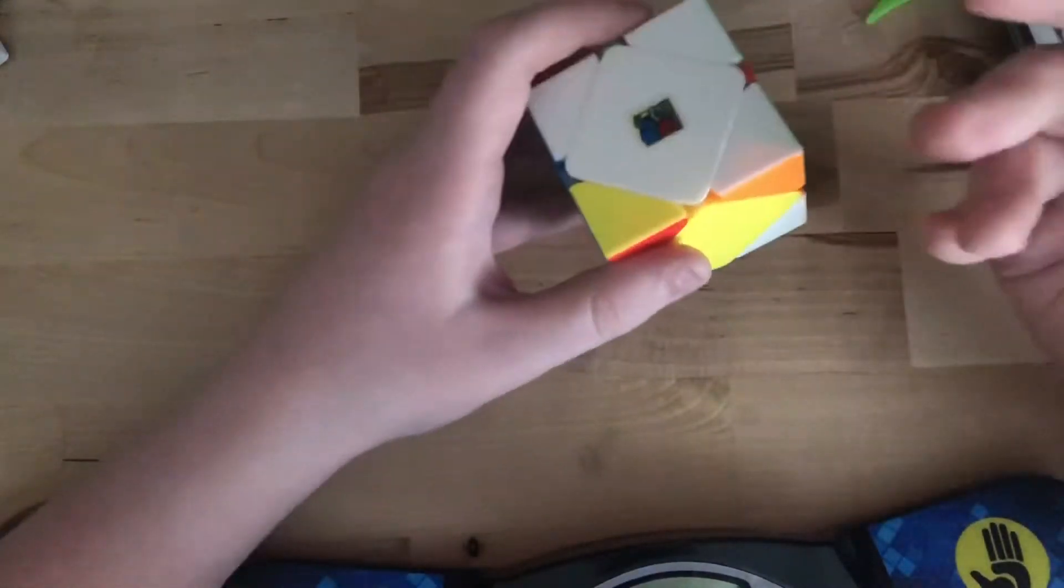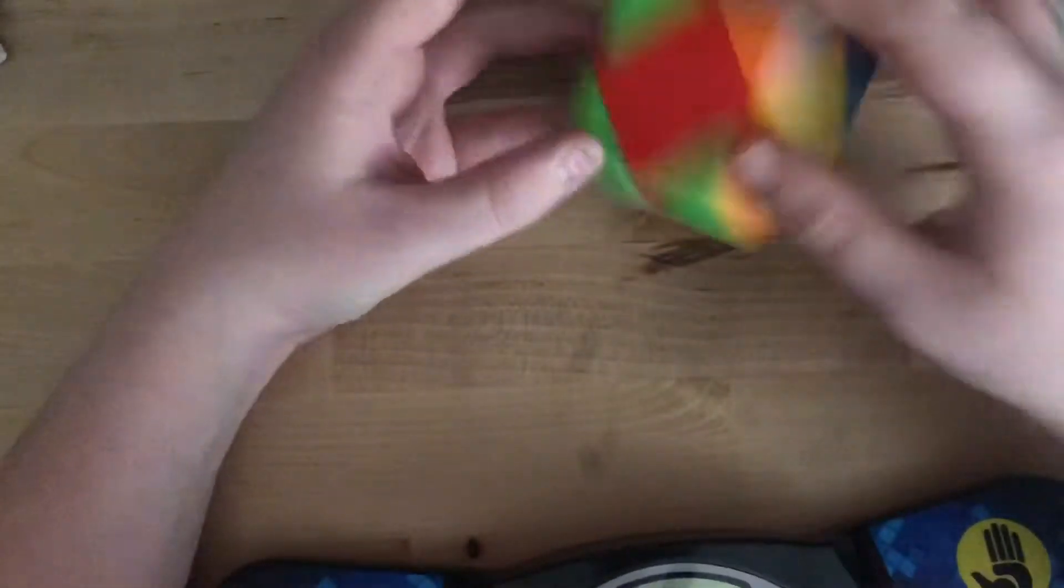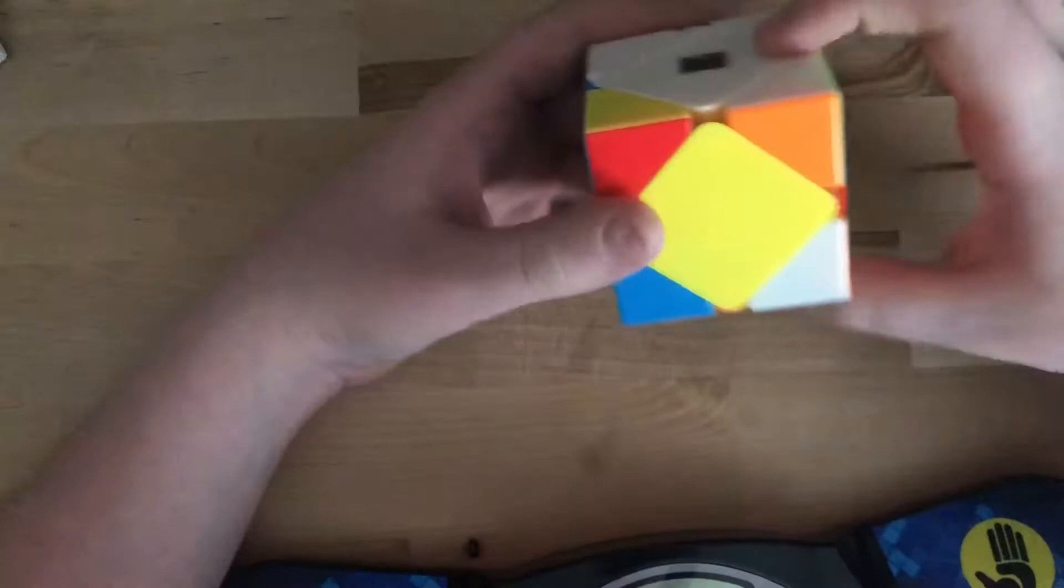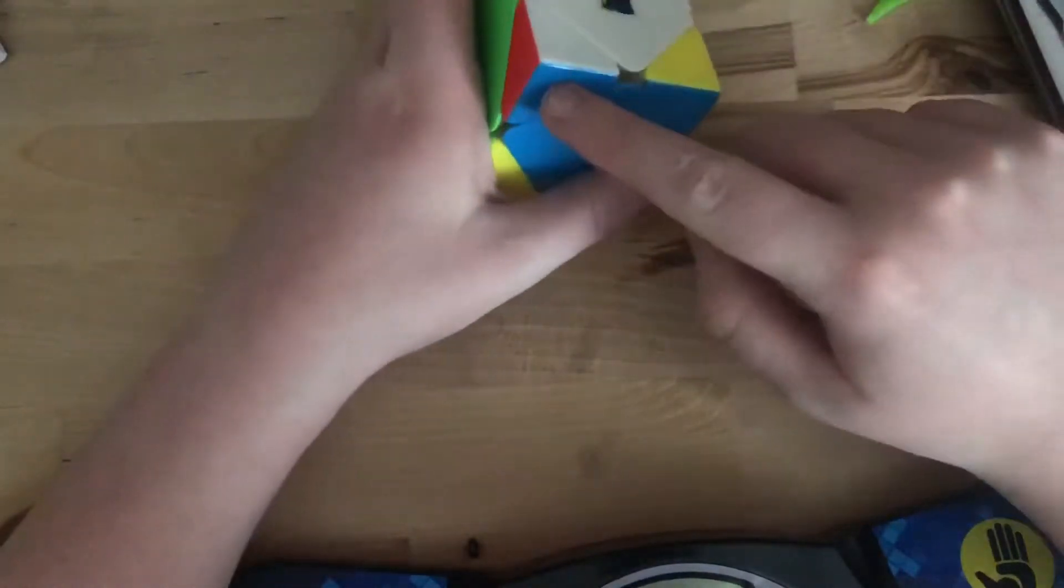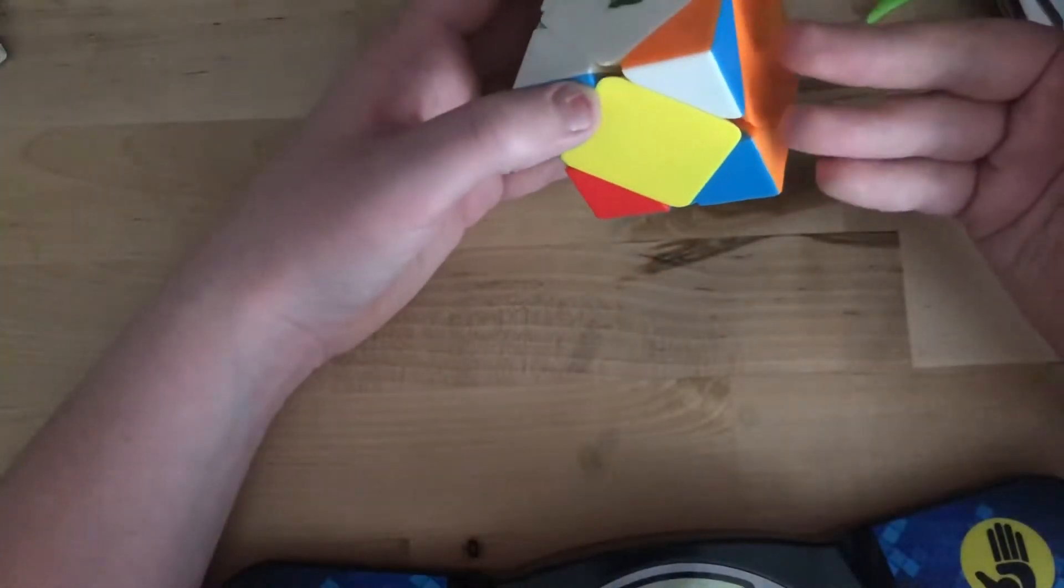Now the final one, this one is blue and orange. So you can see orange side is right here, blue is right here. So when we move it up like this it will be like...